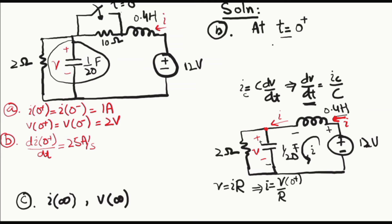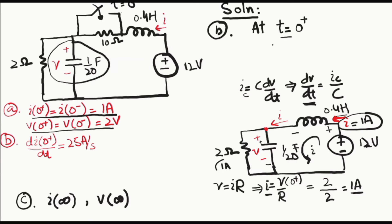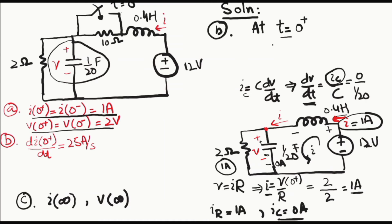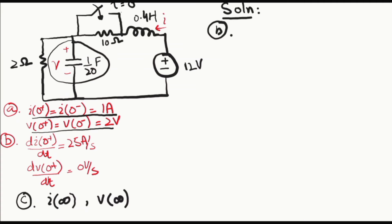Using V = iR: V(0+) = 2 volts, resistor = 2 ohms, so i = 1 ampere. As found in part A, the total current is 1 ampere — all of it flows through the 2-ohm resistor and no current flows through the capacitor. Therefore, capacitor current iC(0+) = 0 amperes, and dv/dt at zero positive equals iC / C = 0 / (1/20) = 0.